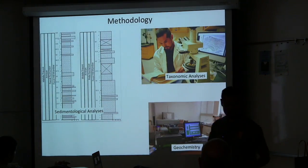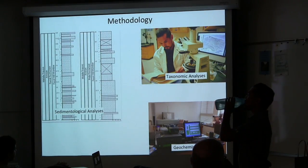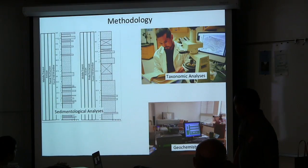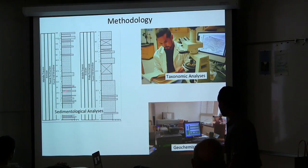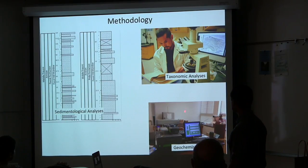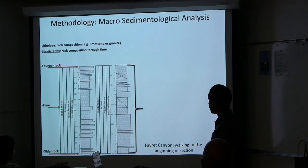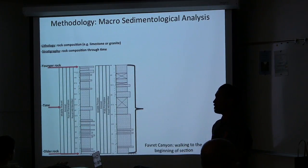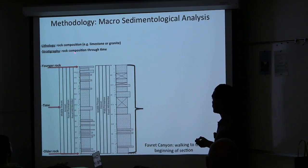Methodology includes a sedimentological analysis, a taxonomic analysis, a carbon isotope analysis, and comparing Fabric to American Canyon. For the macro sedimentological analysis, lithology and stratigraphy was completed in summer 2014. Lithology refers to rock composition, and stratigraphy refers to rock composition through time. Oldest rock is found at the bottom and youngest at the top.